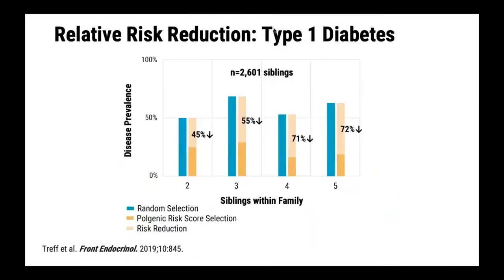For example, that's what we did here with 2,601 siblings with known Type 1 diabetes status. In blue, you see what random selection produced in terms of disease prevalence. And in orange, the polygenic risk score selection.